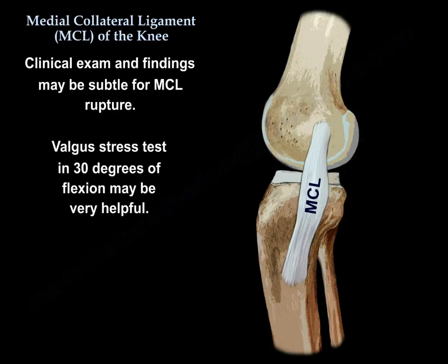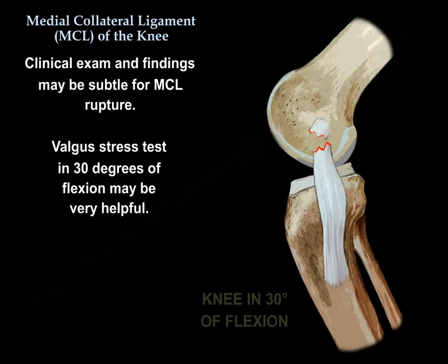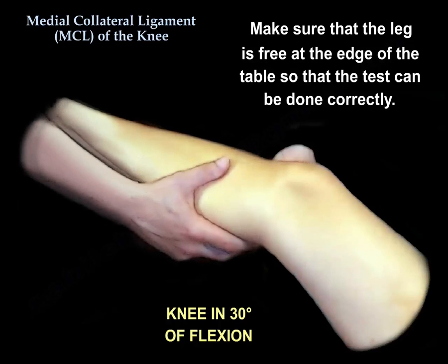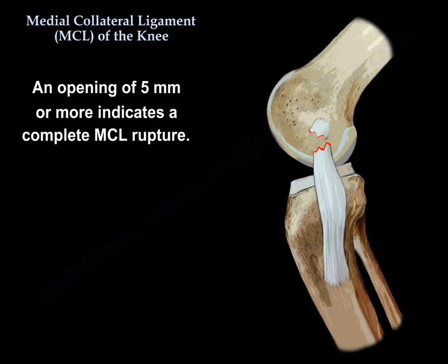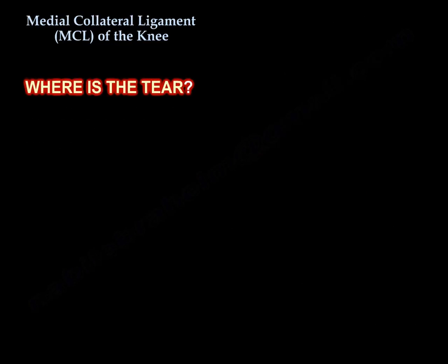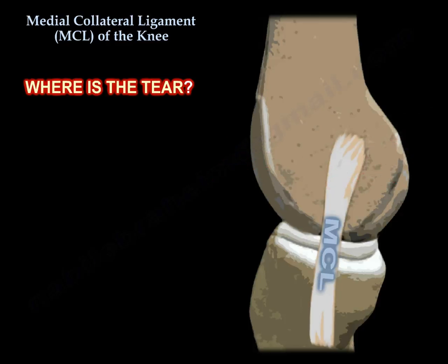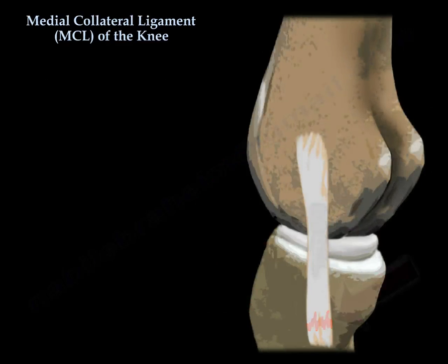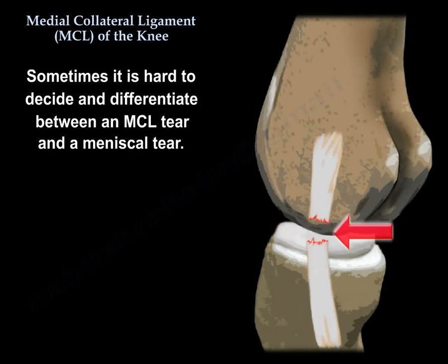Clinical examination findings may be subtle for MCL rupture, and the valgus stress test in 30 degrees of flexion may be very helpful. Make sure the leg is free at the edge of the table so you can do the test correctly. An opening of 5 mm or more compared to the opposite knee indicates complete MCL rupture. You then want to decide where the tear is: is it proximal, mid portion, or distal?